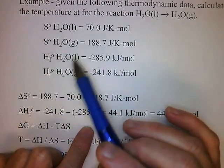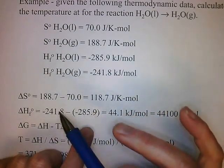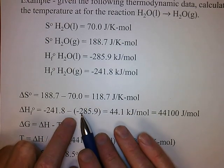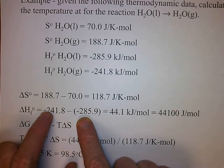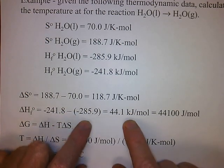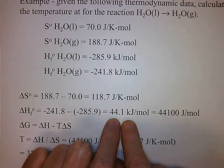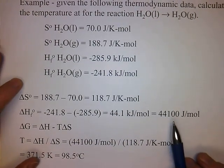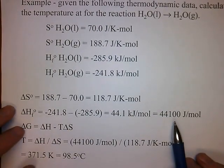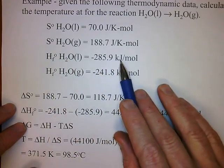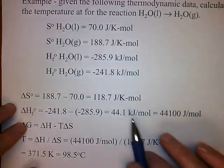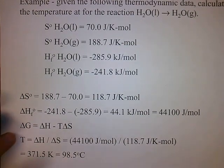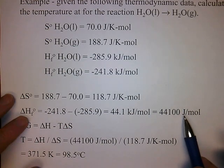Now we'll calculate the change in enthalpy from our heats of formation. So −241.8 minus −285.9 — the negative times the negative becomes a positive — so basically minus 241.8 plus 285.9 is 44.1 kilojoules per mole, which I multiply by 1,000 to convert into joules per mole. I have to be consistent with units: enthalpies are usually in kilojoules per mole, and entropy is usually in joules per kelvin mole, so I converted this into joules.